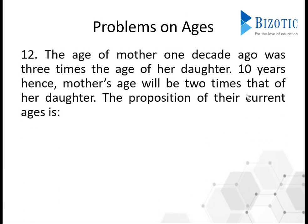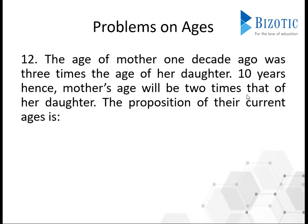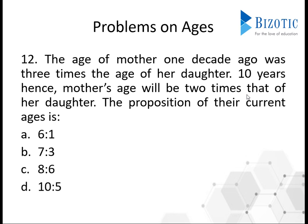The next problem: the age of a mother one decade ago was three times the age of her daughter. After the next 10 years, the mother's age will be two times that of the daughter. What is the ratio of their current ages?